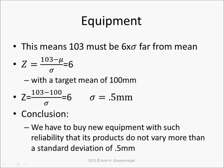This means that 103 must be six standard deviations from the mean. That means if we subtract 103 minus mu divided by sigma, that should equal six. The mean we want is 100 millimeters, so 103 minus 100 divided by the standard deviation should equal six.